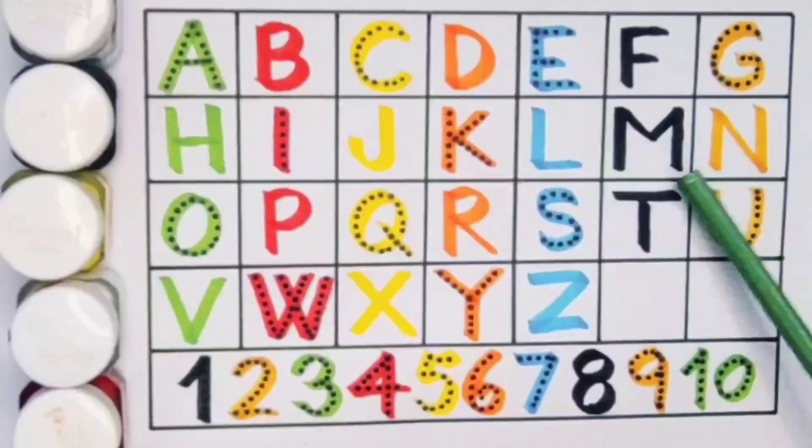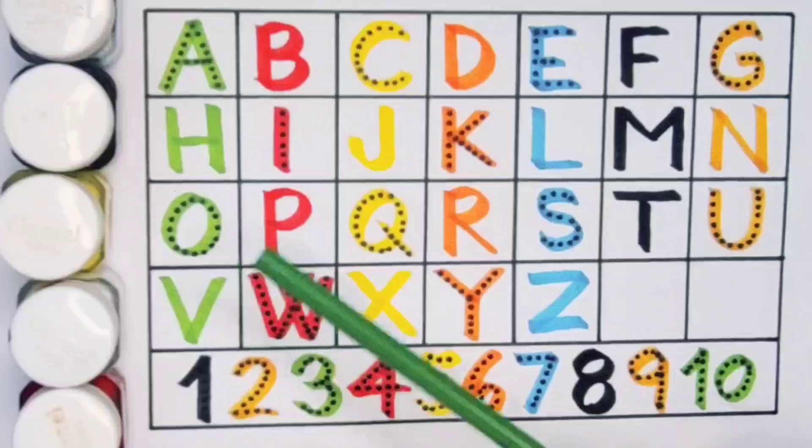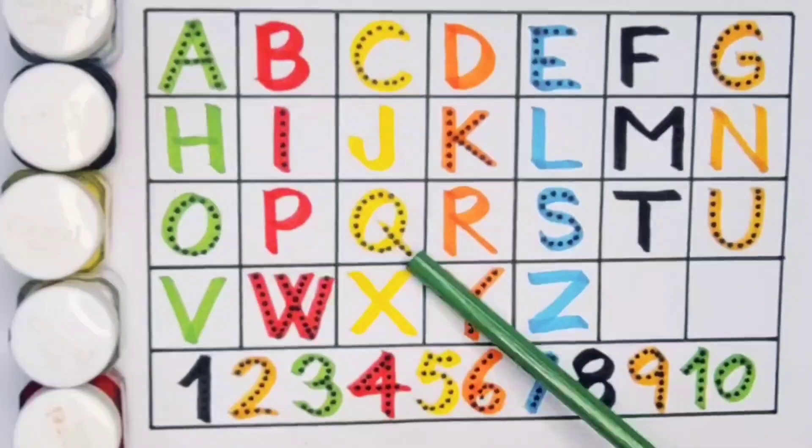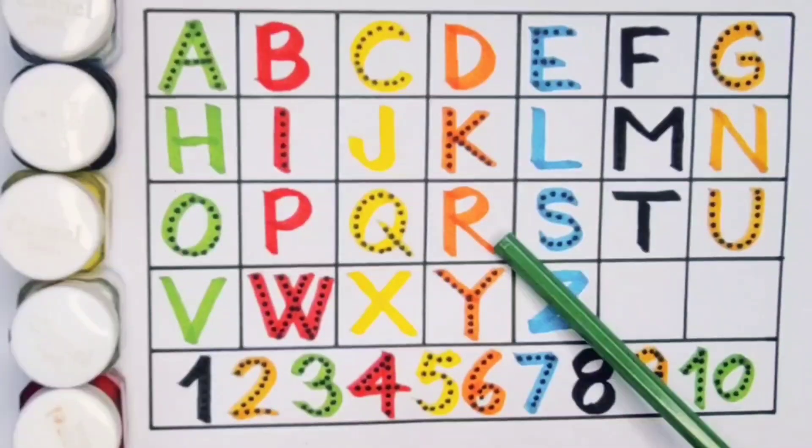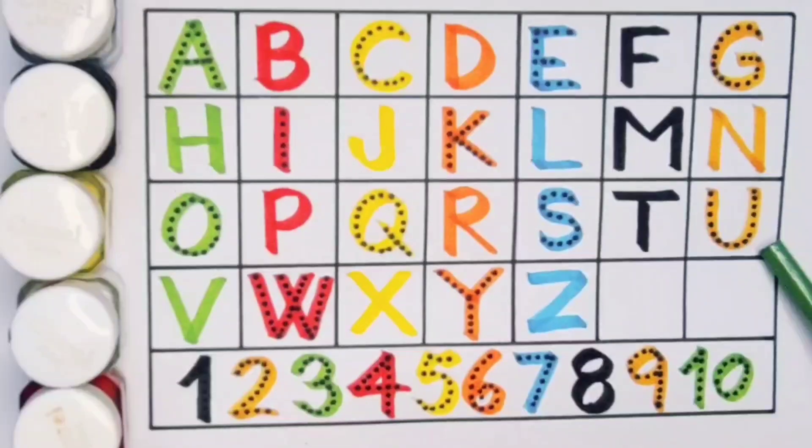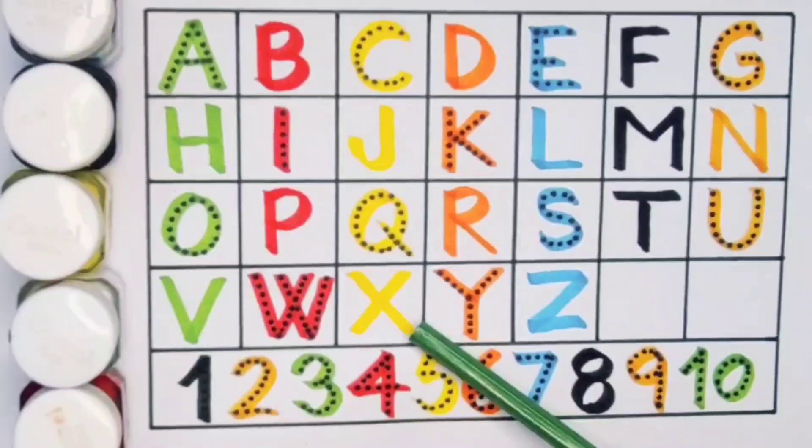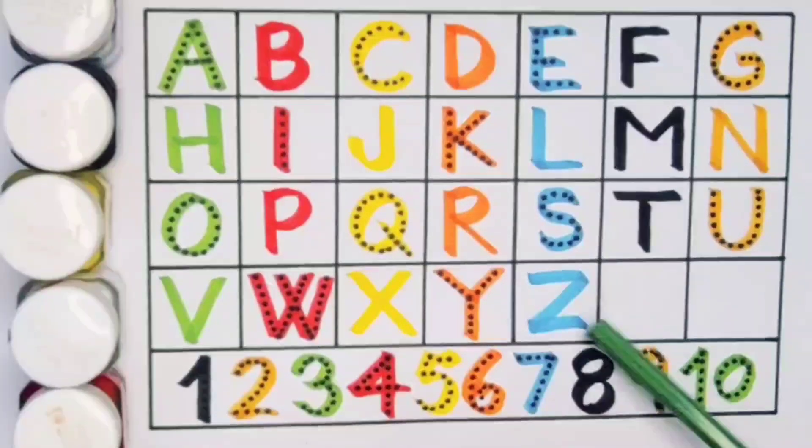M for milk, N for net, O for octopus, P for panda, Q for quail, R for ring, S for strawberry, T for tomato, U for unicorn, V for vegetable, W for water, X for x-ray, Y for yogurt, and Z for zoo.